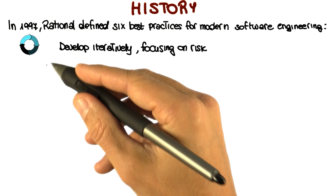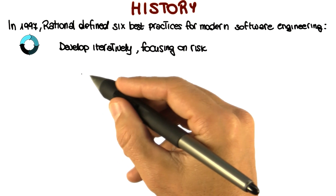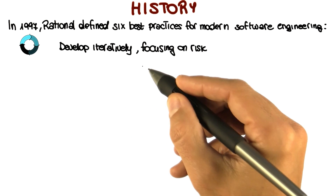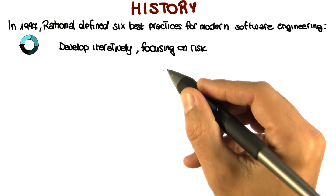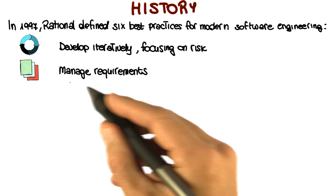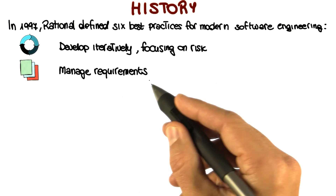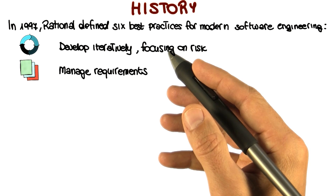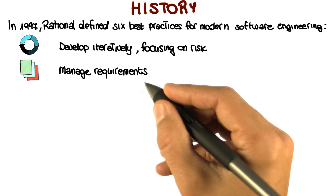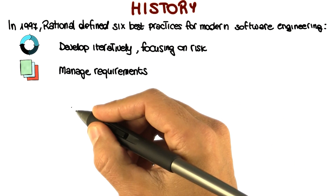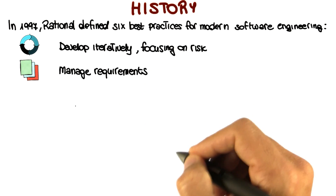The first practice involved developing in an iterative way, with risk as the primary iteration driver. The second practice had to do with managing requirements, including updating them and keeping traceability information between requirements and other software artifacts.